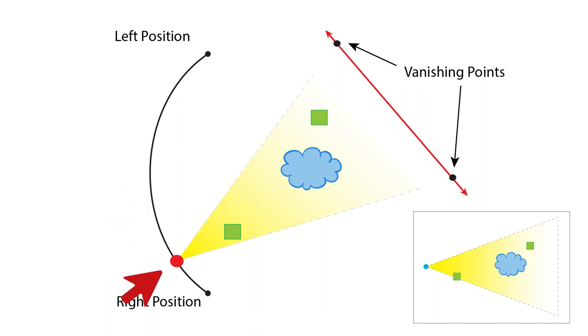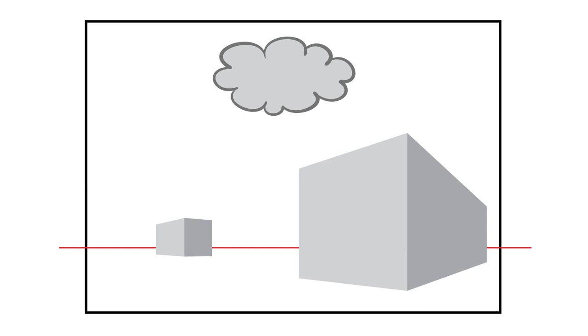Now let's go back in the viewer's shoes. Just like before we have the horizon line, the boxes and the cloud. But now I have two points instead of one.